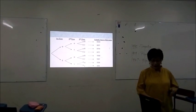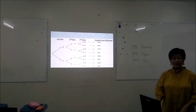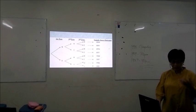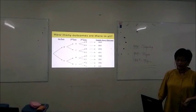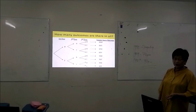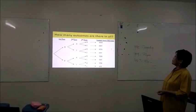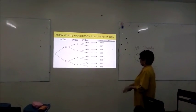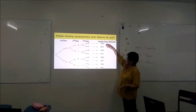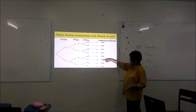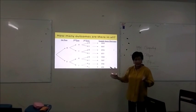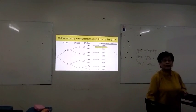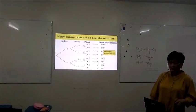From this tree diagram, we can answer the questions. The first question is: how many outcomes are there in all? We count all of them — one, two, three, four, five, six, seven, eight outcomes. So the answer is there are eight outcomes.